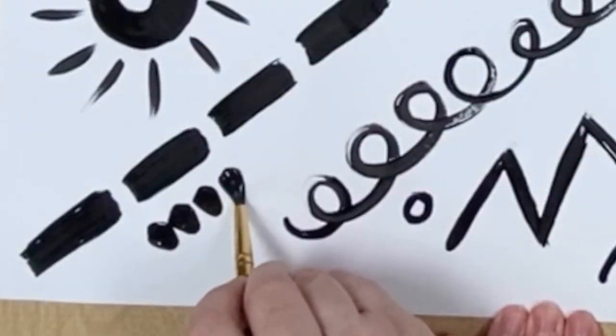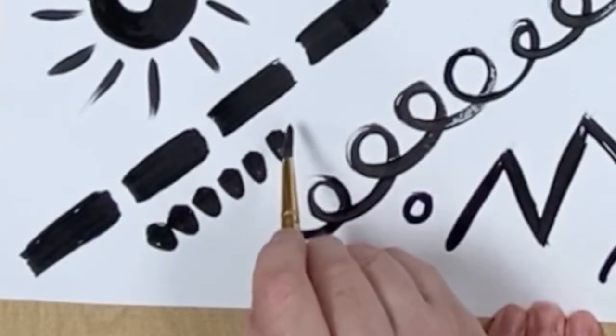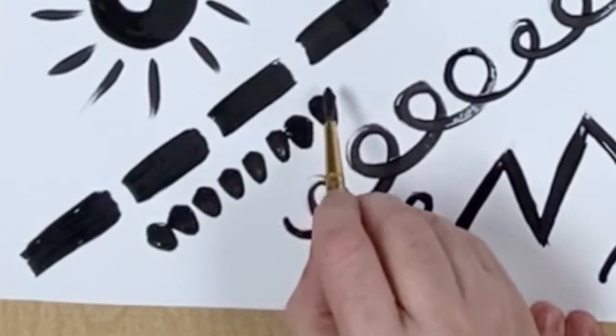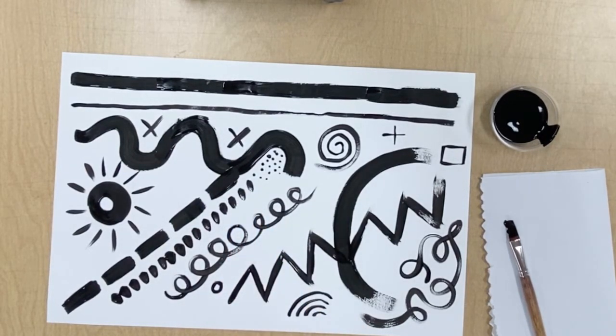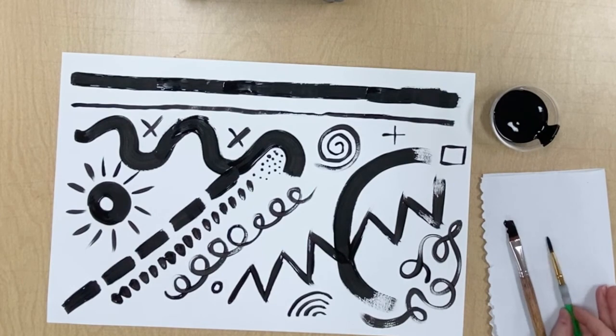This is interesting. I just press the brush down and the shape of the bristles makes an interesting mark. When you're done, place your paint brush on the paper towel and admire your masterpiece.